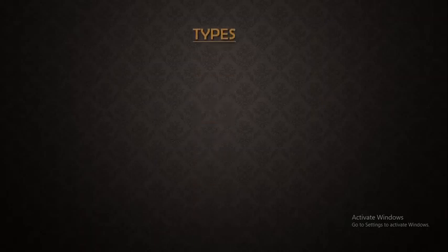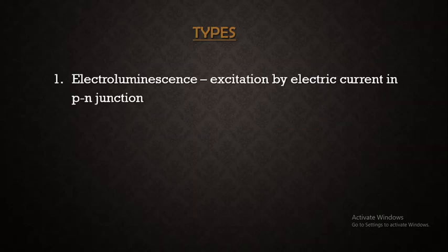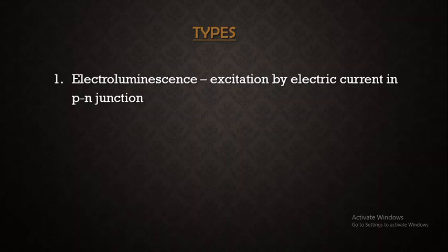Coming to the types of luminescence: generally, corresponding to different absorption processes, when you reverse them there are different types of luminescence mechanisms. The first is electroluminescence, where the stimulus is electric current. When an electric current is passed through a PN junction, excitation takes place, and upon de-excitation the energy is released as light. This is the principle behind LEDs. So this is the first type of luminescence in semiconductors.